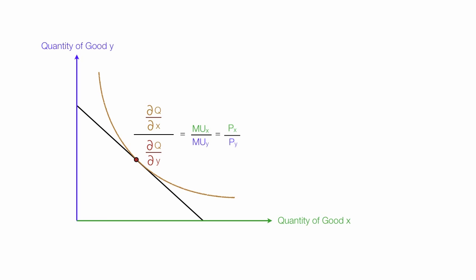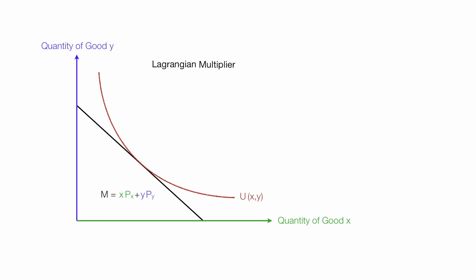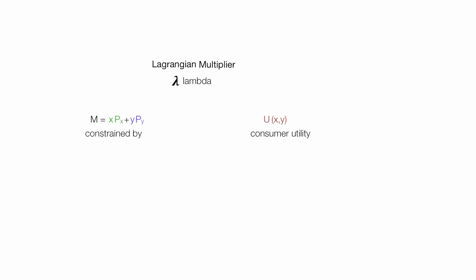My budget equation — I'll put that in color, it's easier to see and read. I'm going to say that utility is a function of x and y for the indifference curve. I'm going to use a Lagrange multiplier, using the symbol lambda — sometimes you'll see this fancy L. I'm going to demonstrate that that's where the consumer maximizes utility with a budget constraint: maximizing consumer utility constrained by budget.